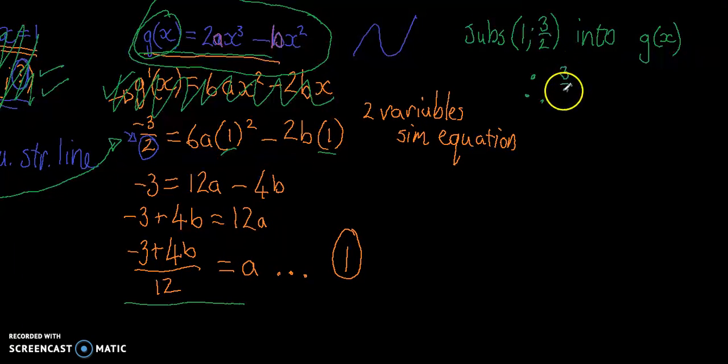So now I've got 3 over 2 equals 2a, what was x? 1 cubed minus b, x was 1, squared. Okay, so now it's pretty easy to solve for. I've got 3 over 2 equals 2a, who would have guessed, minus b.